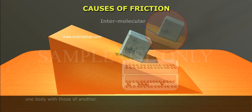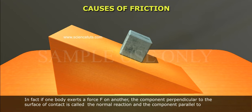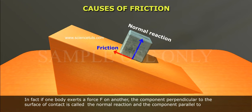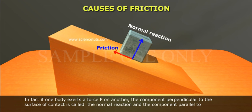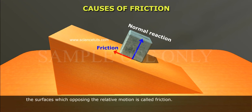If one body exerts a force F on another, the component perpendicular to the surface of contact is called the normal reaction, and the component parallel to the surface opposing the relative motion is called friction.